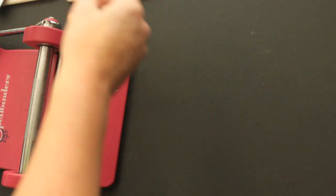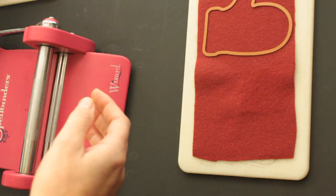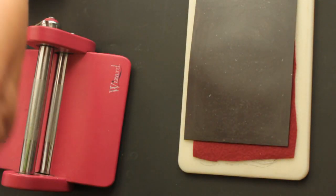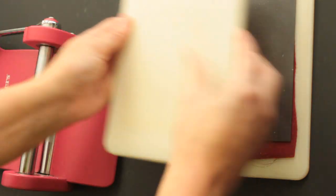First, you will need some felt and Spellbinders nested mitten dies. You use the biggest die and cut it one time, one way.